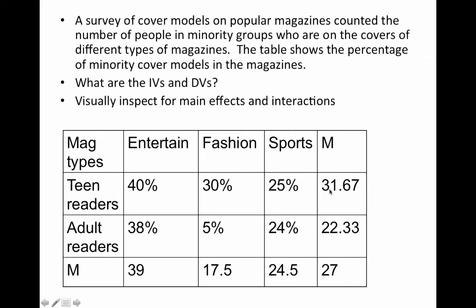For main effects, we're going to ignore the columns and just go for the two rows. 31 and 32% versus 22% — that's about a 10% difference, a pretty good difference. Looks like there's a main effect there. And then we've got 39, 17.5, and 24 for kind of magazine, so it looks like there's a main effect there too.